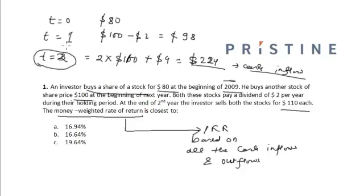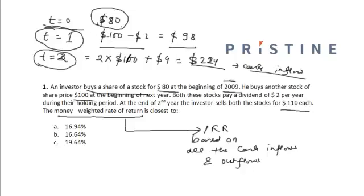To summarize: at the beginning of year 2009 (t=0), he incurs a cash outflow of $80. At t=1, he incurs a net cash outflow of $98, which is $100 invested in purchasing the stock minus $2 dividend received from the first stock. At t=2, the net cash inflow from selling both stocks at $110 each plus $4 dividend received equals $224.